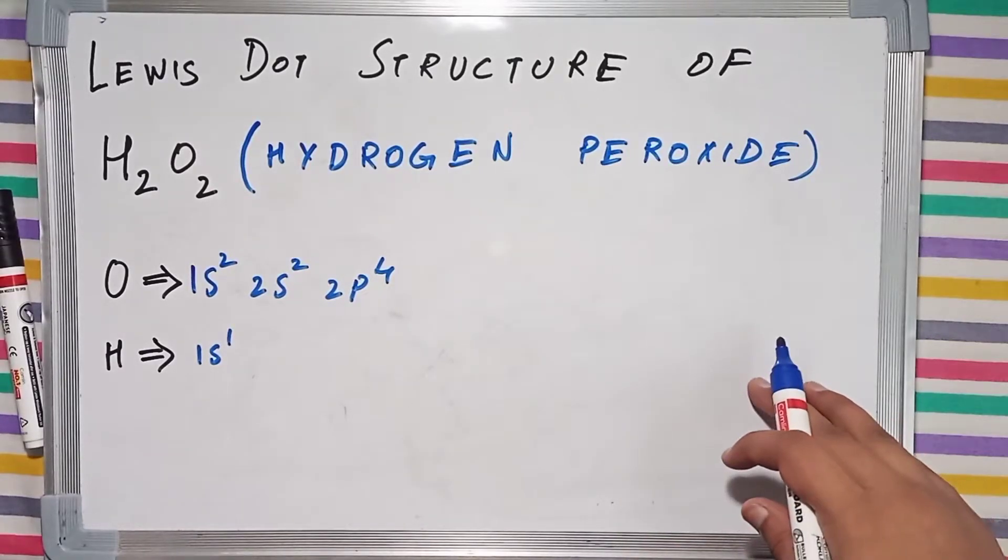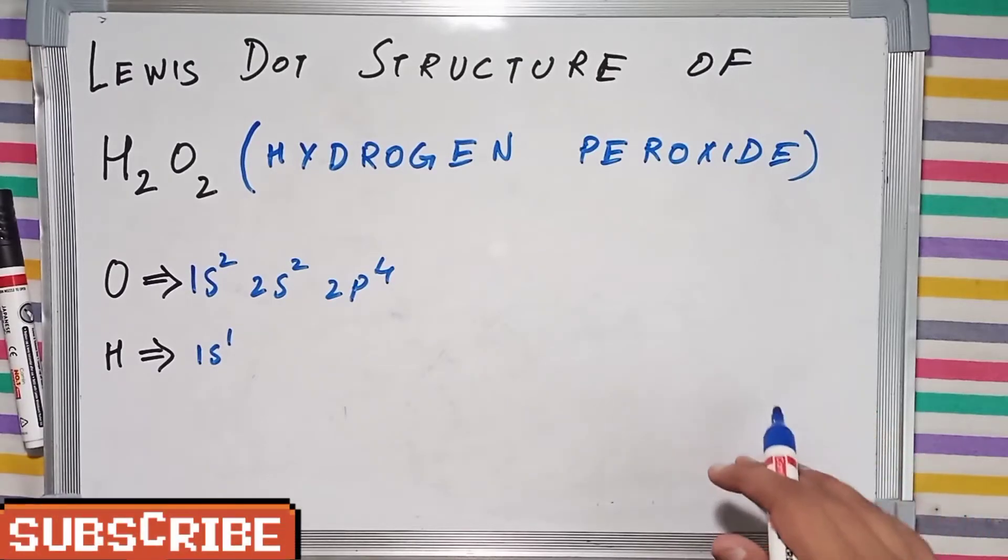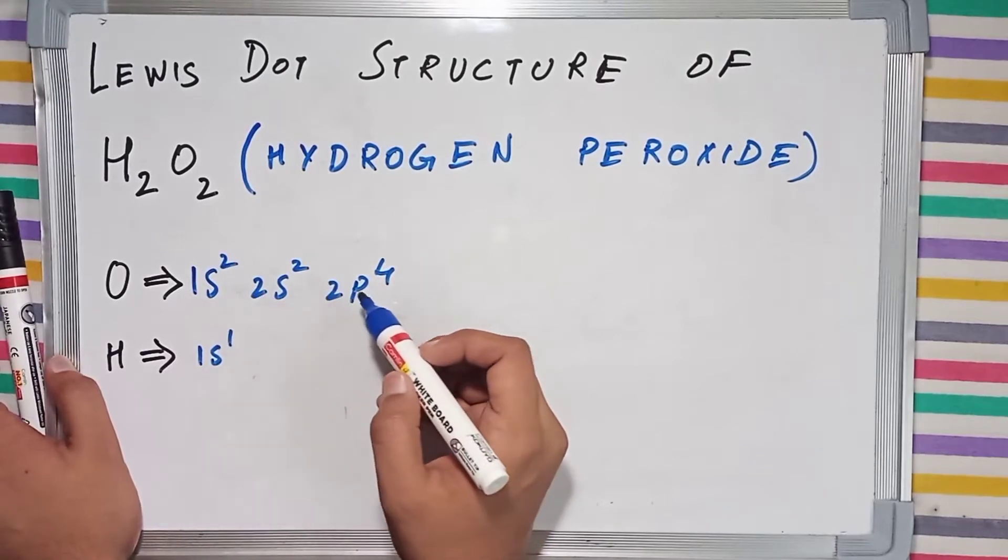Today we are going to draw the Lewis dot structure of H2O2, also known as hydrogen peroxide. The number of valence electrons in oxygen is 6.